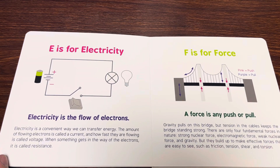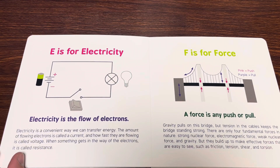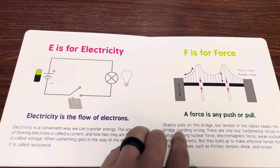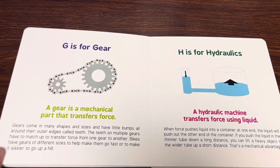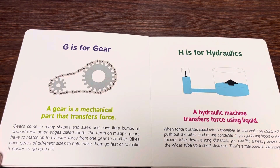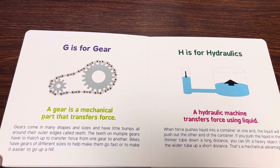F is for force. A force is any push or pull. G is for gear. A gear is a mechanical part that transfers force.